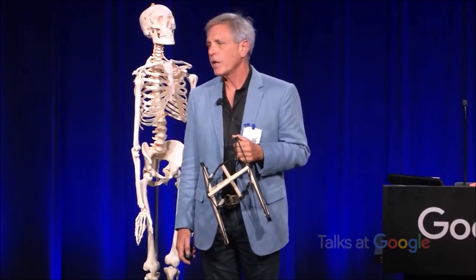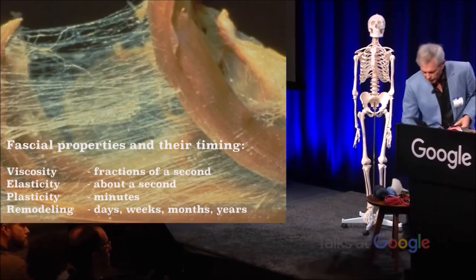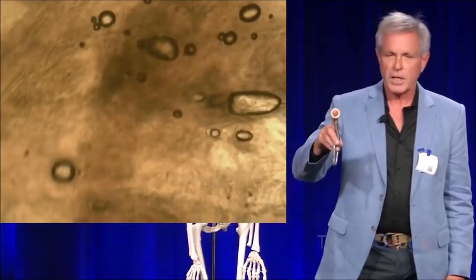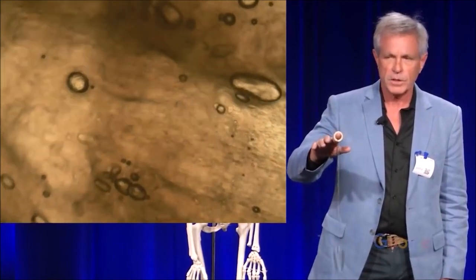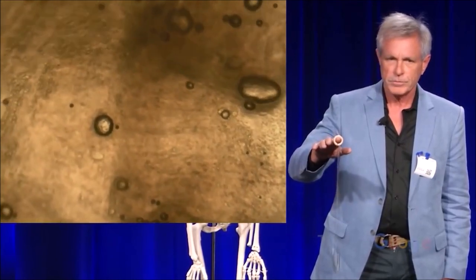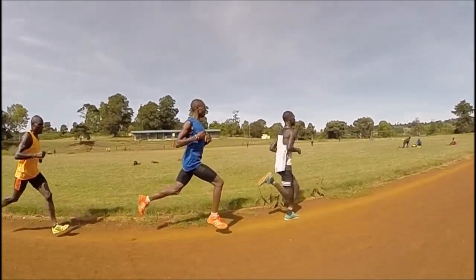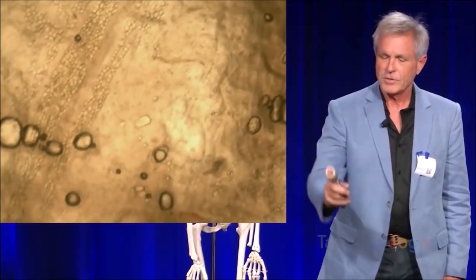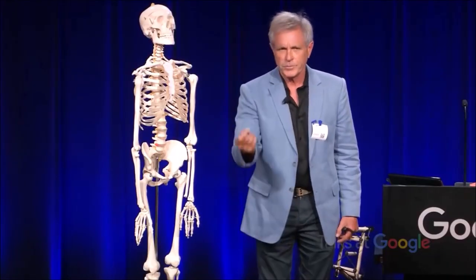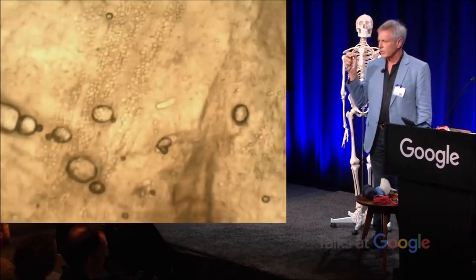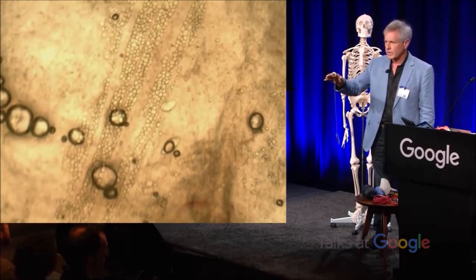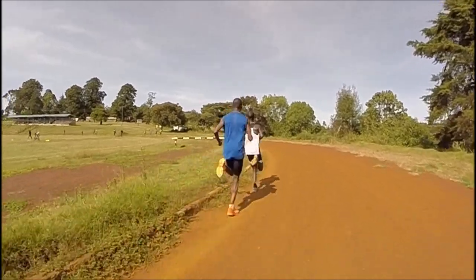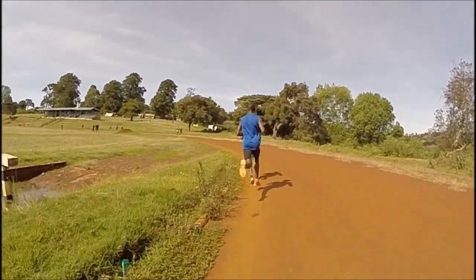Fascia has properties that are really important in training. I want to highlight one: elasticity. Notice just how much effort I am using to keep this carabiner going up and down. What we've discovered is that fascia is viscous, as you see on the screen, but also elastic — meaning it has viscoelastic properties. This elasticity means it can store and give back energy, store and give back, store and give back.